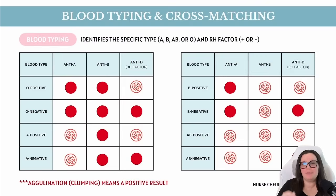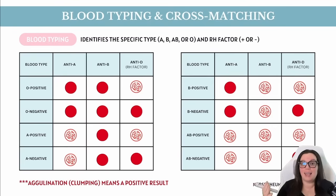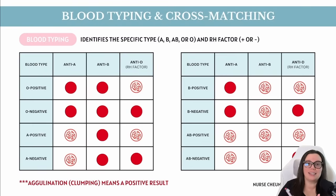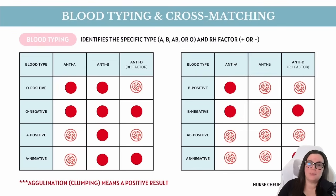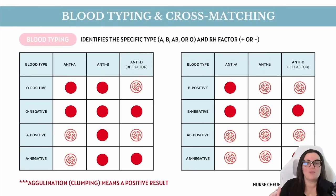Before anyone gets a blood transfusion, we make sure we have the perfect match through blood typing and cross-matching. We use special serums containing known antibodies: anti-serum A has antibodies against A antigens, anti-serum B has antibodies against B antigens, and the third test is anti-D, which tests for the RH system. These serums are mixed with a sample of the person's red blood cells. If agglutination — clumping — occurs, that means the matching antigen is present on those red blood cells.